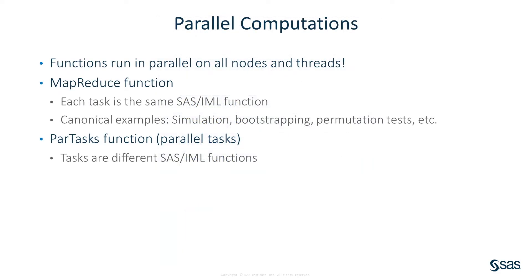One of the new features in the IML action is support of parallel computation. There are two main ways to compute in parallel. The map reduce function enables you to run a function called a mapper on every thread. The results of the mapper are aggregated across all threads by the reducer function, which combines all the results. For example, a reducer function might perform a sum or a concatenation. Canonical examples include simulation, bootstrapping, and other resampling methods.